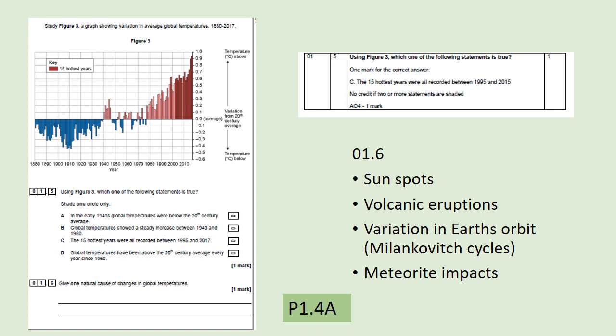Question 1.5 is a typical graph question. Before answering, make sure you've looked at the graph labels — year at the bottom, temperature above and below average on the side — and notice the key showing the 15 hottest years. Option A about the early 1940s being below average is false; B about a steady increase 1940–1980 is false. The answer is C — the 15 hottest years all occur after 1980. The clue was in the key; examiners won't put information like that for no reason.